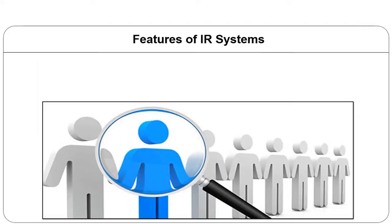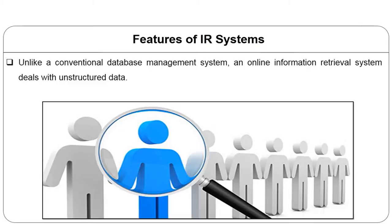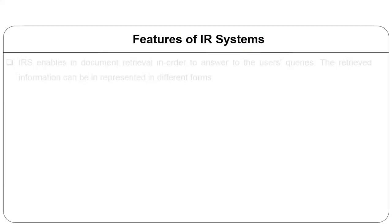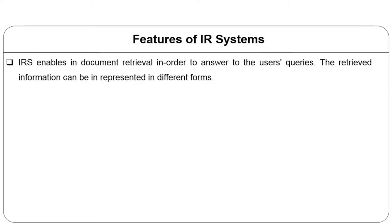The main objective of databases is to enable users to search for specific records matched with one or more specific conditions or criteria, which are usually set by the user in an online environment. Unlike a conventional database management system, an online information retrieval system deals with unstructured data. The main purpose of designing an information retrieval system is to meet users' requirements, whether talking about the traditional offline bibliographic model or online web-based systems. An IRS enables document retrieval to answer user queries, and the received information can be represented in different forms.